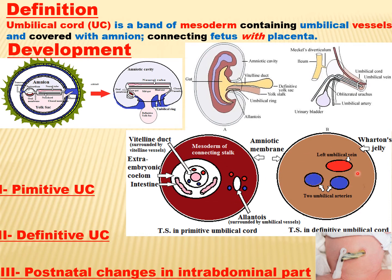Moving to the second stage: the definitive umbilical cord. The definitive umbilical cord is formed only from mesoderm that becomes loose to form what is called Wharton's jelly, and only three vessels: the left umbilical vein and two umbilical arteries. The vein carries a red color as it carries oxygenated blood, while the arteries carry non-oxygenated blood.